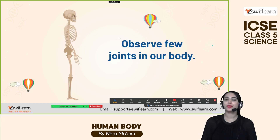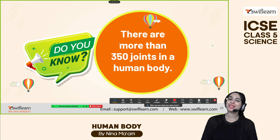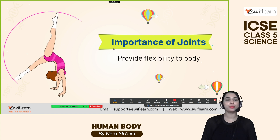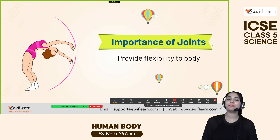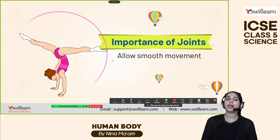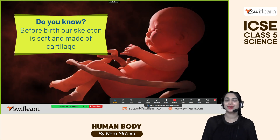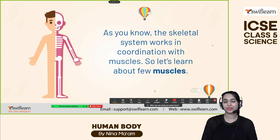Let's observe a few joints in our body — there are more than 350 joints in the human body. The importance of joints: they provide flexibility to the body and allow smooth movement. Also, before birth our skeleton is soft and made up of cartilage. Now we are done with the joints — let's learn about the muscles.